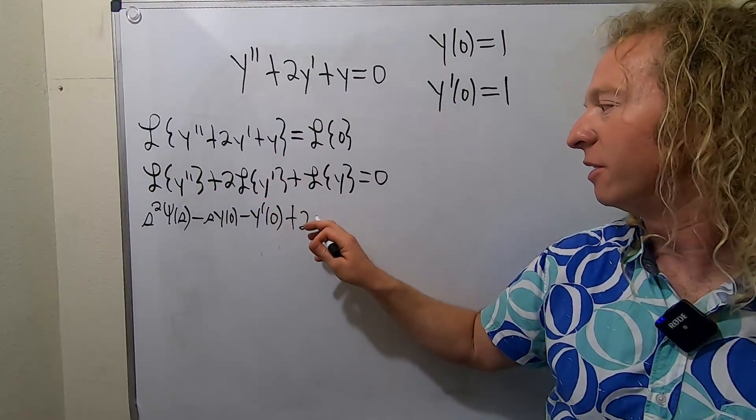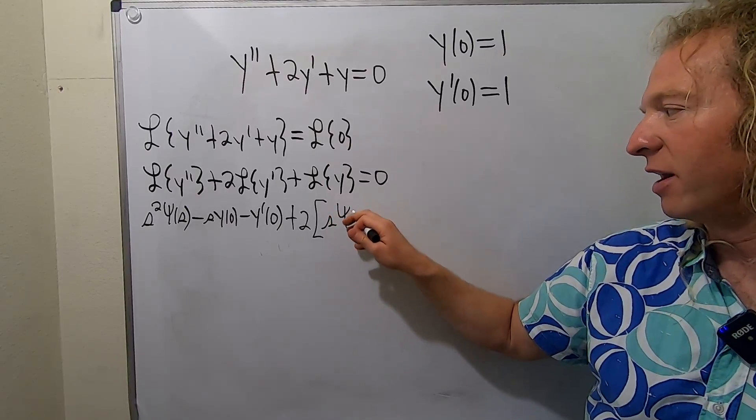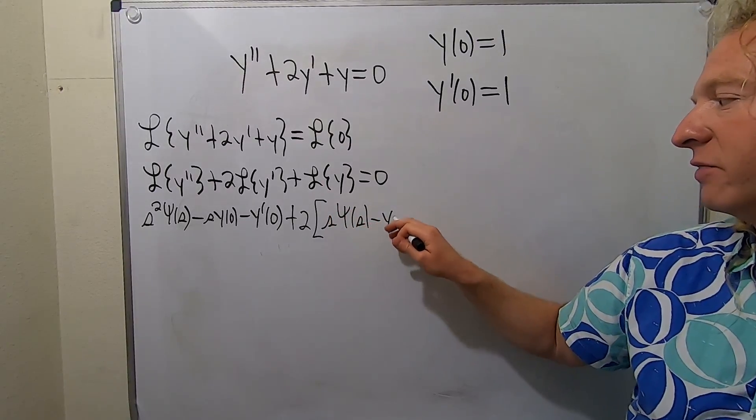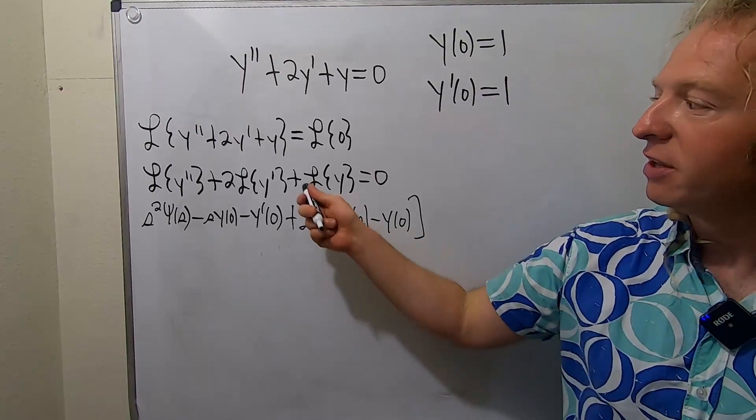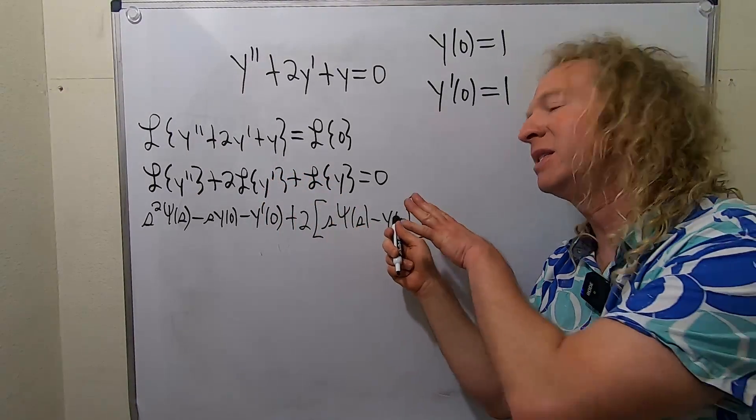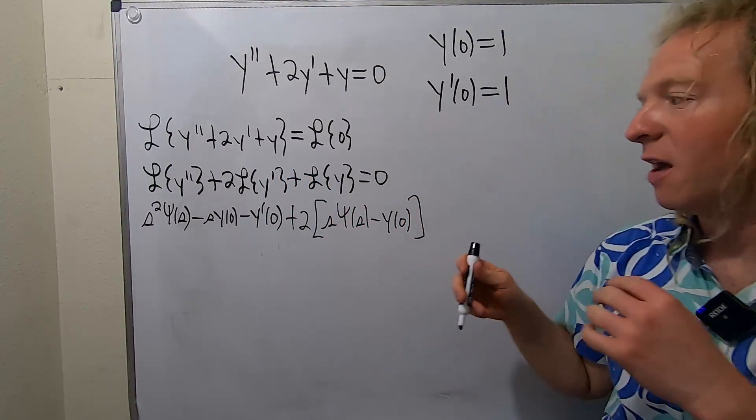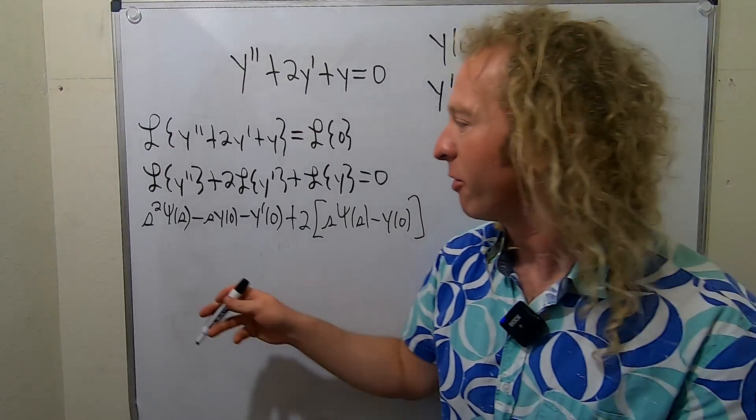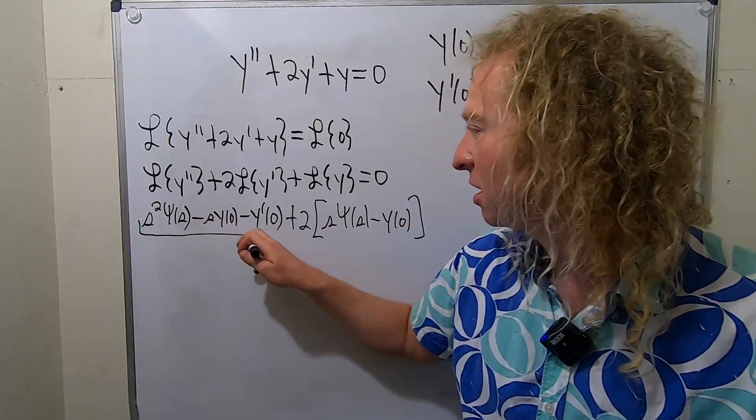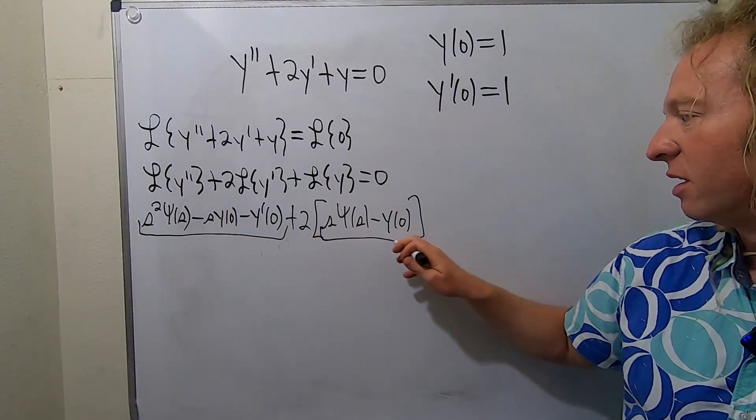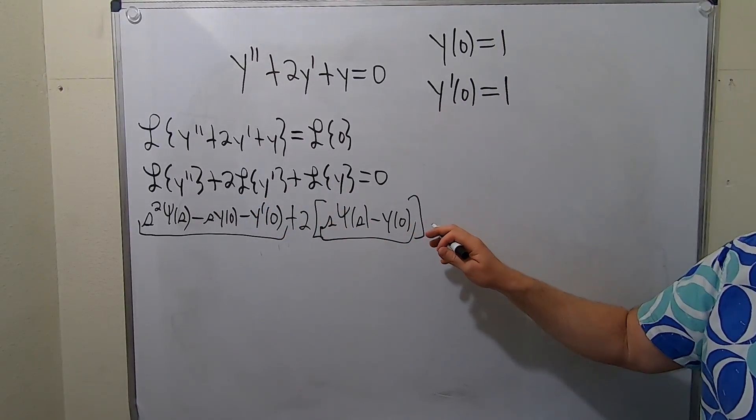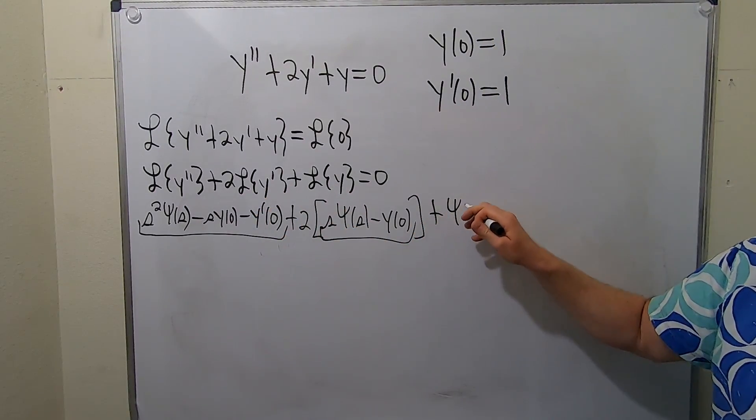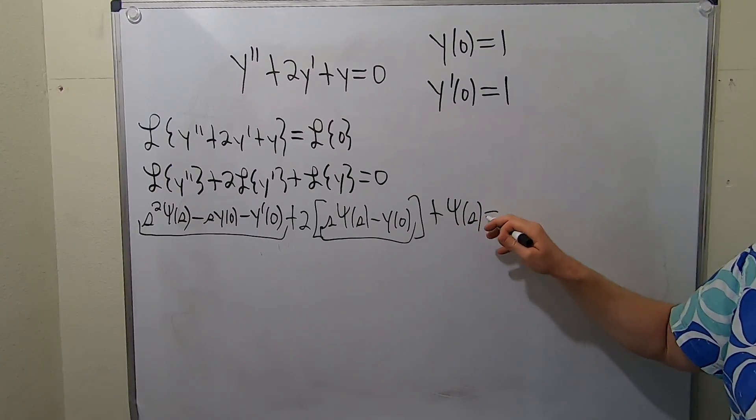Plus two. The formula here is S pitchfork Y of S minus Y of zero. Notice it ends at one less derivative. This is the first derivative. This is the zeroth derivative. Again this is probably one of the hardest things to memorize but these are just formulas. And the Laplace of Y, we say that's pitchfork Y of S. And that's equal to zero.